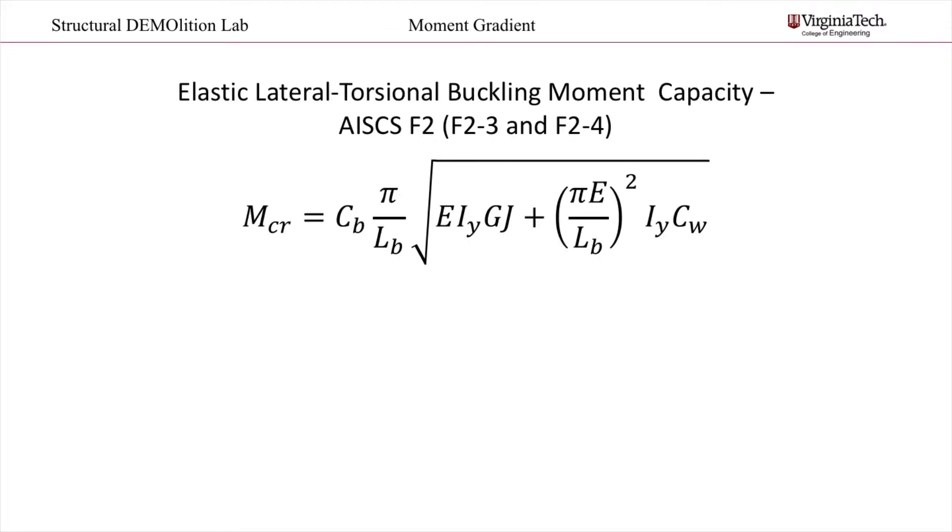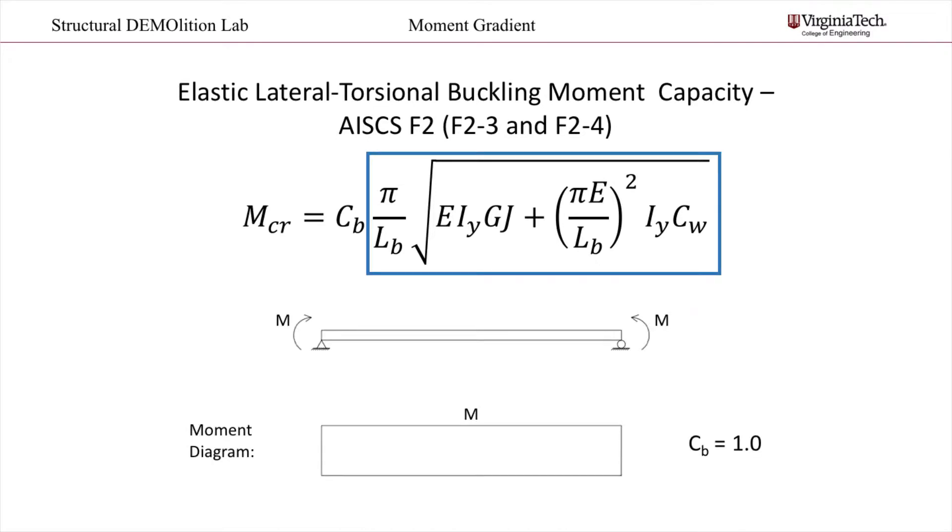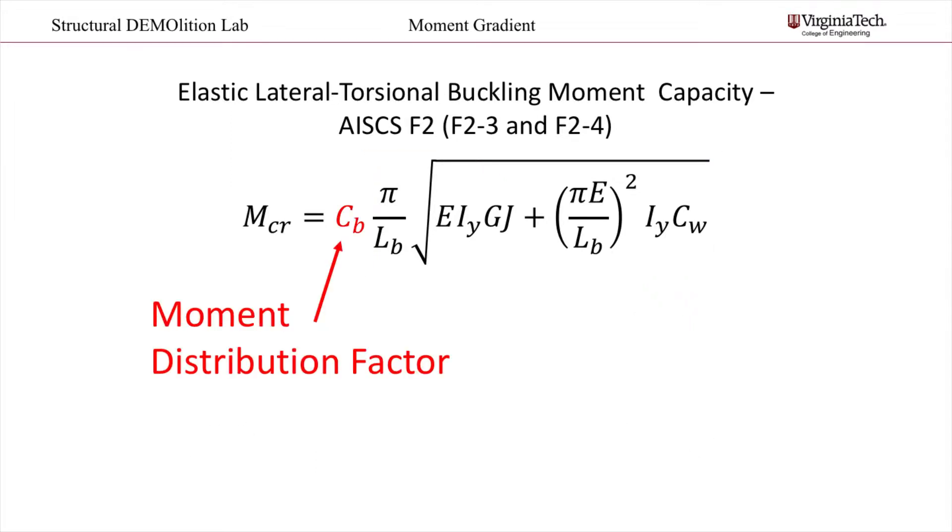Seen here is the moment capacity from elastic lateral torsional buckling failure. This portion of the equation is based on a beam with a constant internal moment, as shown below the equation. Of course, we do not always have a constant internal moment. To get the moment capacity for other load cases, AISC simply multiplies the equation by this modification factor. This factor is greater than 1 if the moment varies along the unbraced span.